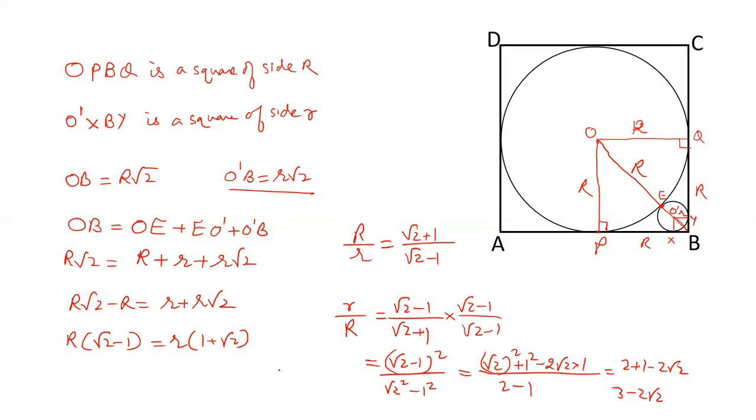So the ratio of capital R to small r is 3 minus 2 root 2. And if we want small r over capital R, that equals 3 plus 2 root 2.